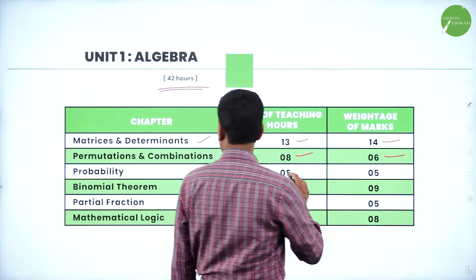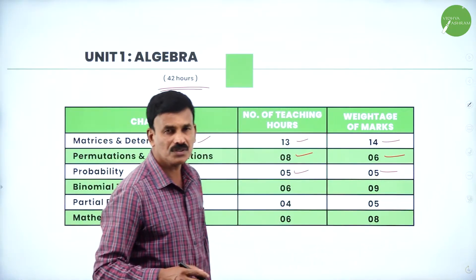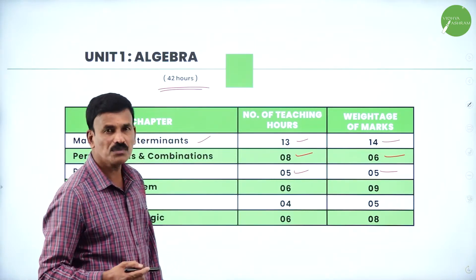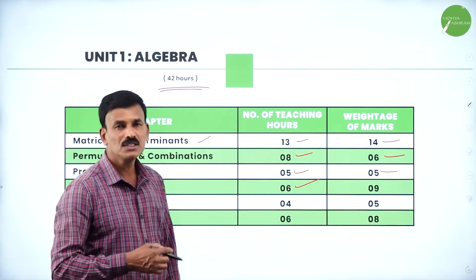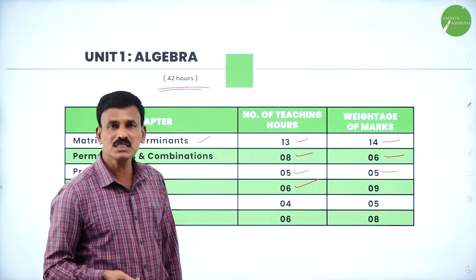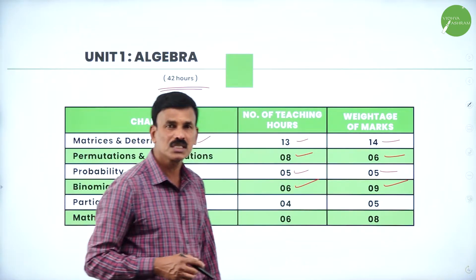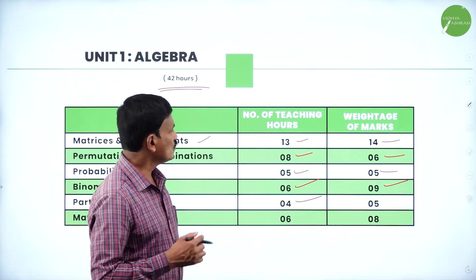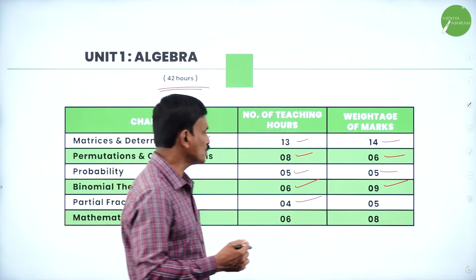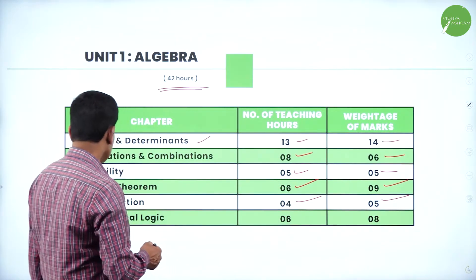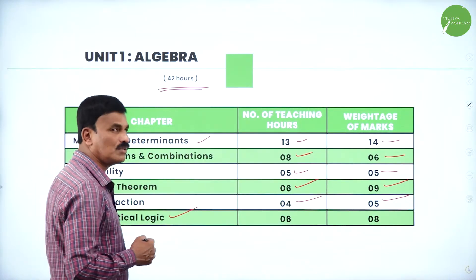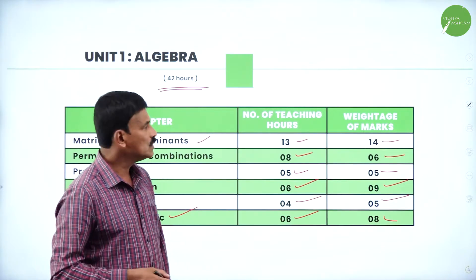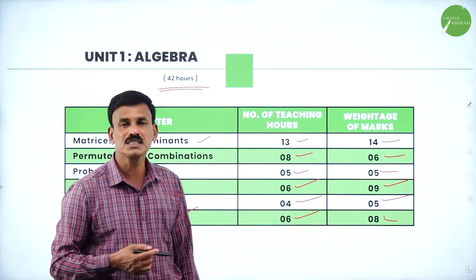The next chapter is Probability — 5 teaching hours and 5 marks. Then the next chapter is the Binomial Theorem, also a very easiest and important chapter — 6 hours and 9 marks. The next chapter is Partial Fractions, a very simple chapter — 4 hours and 5 marks. The last chapter in Unit 1 Algebra is Mathematical Logic — and this is how the teaching hours and maximum marks are distributed for each chapter in Algebra.